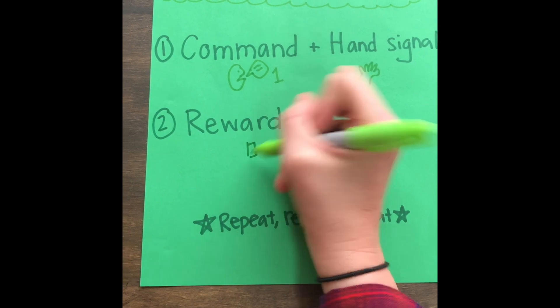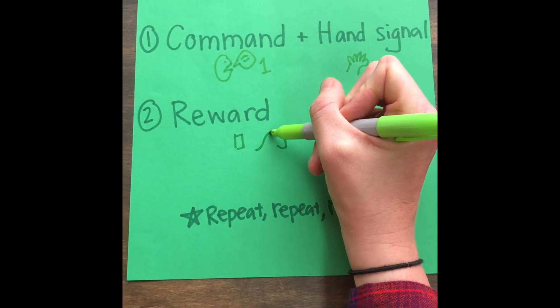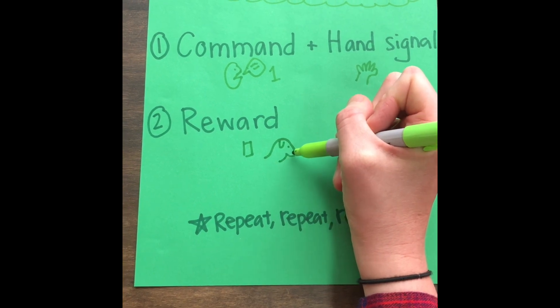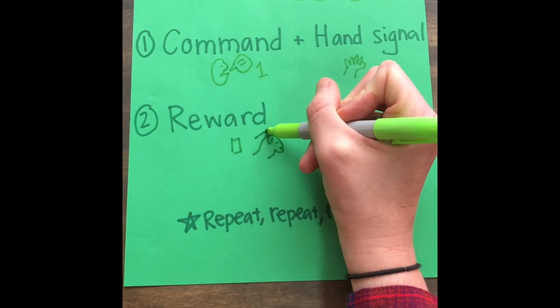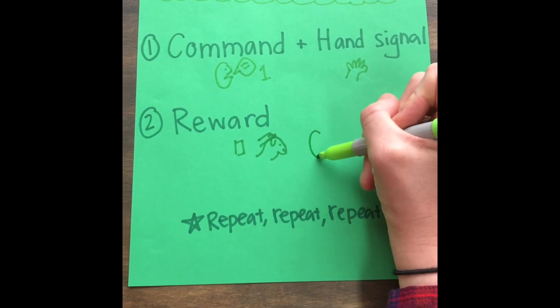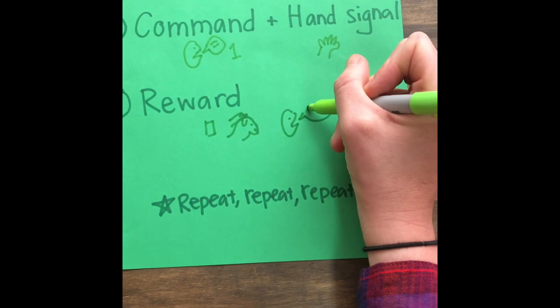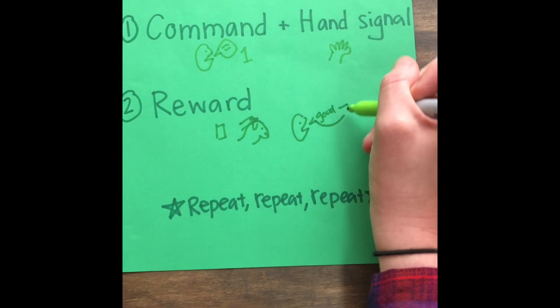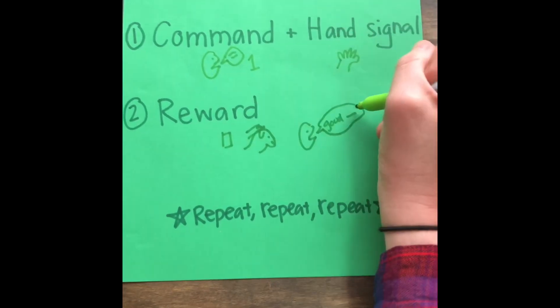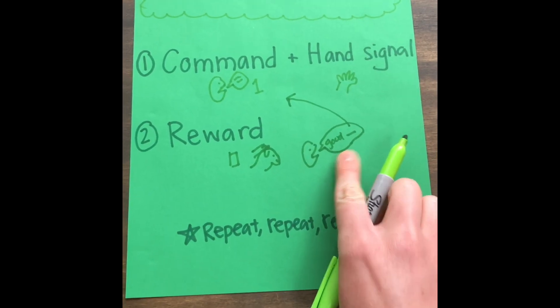So a reward can be a treat, it could also just be a pat on the head. It could also be you saying something to them, and when you say something to them you usually want to say good and then whatever action or whatever that command was that you told them to do. So good sit or good stay or whatever it is.